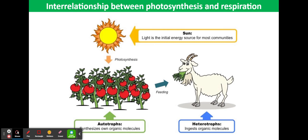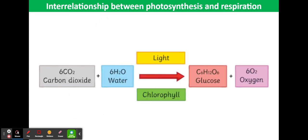The general equation for photosynthesis is six carbon dioxide molecules with six water molecules producing one glucose molecule and six oxygen molecules.